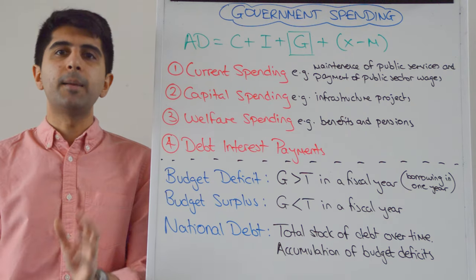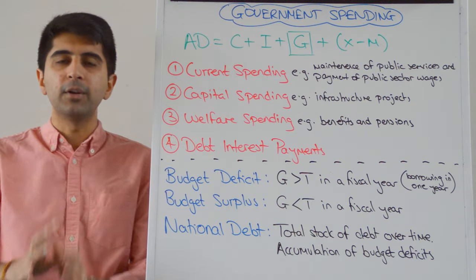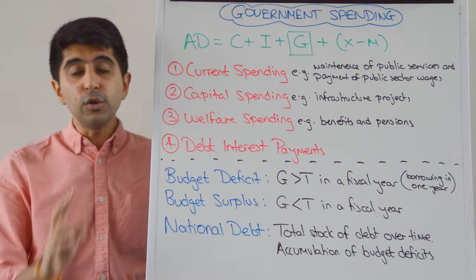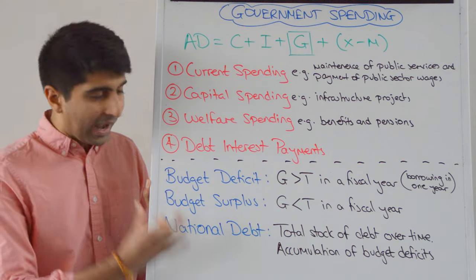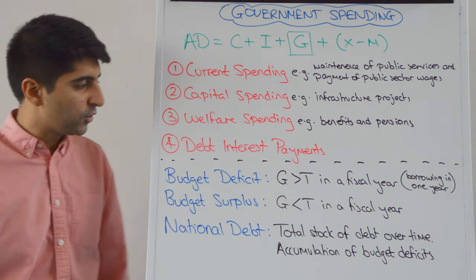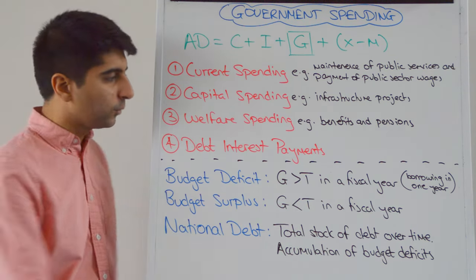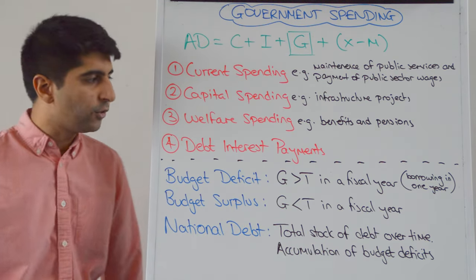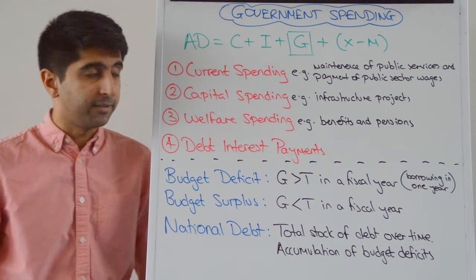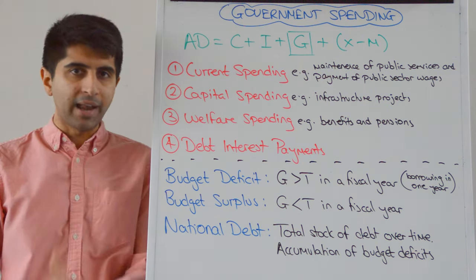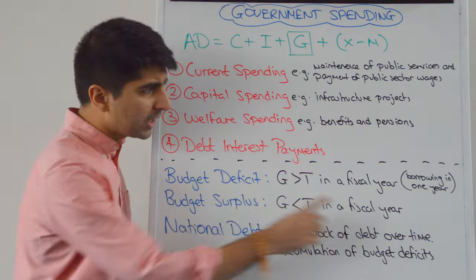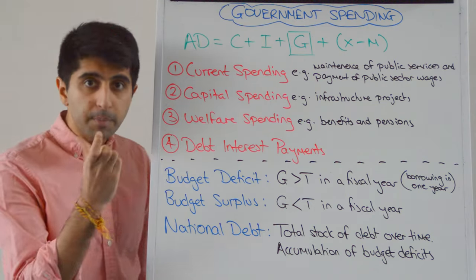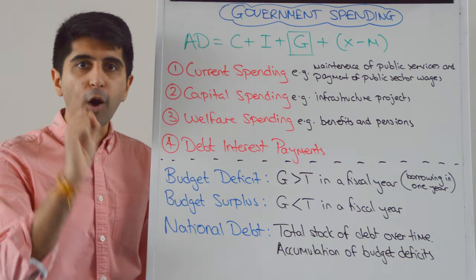We also need to know some key terms when it comes to government spending. The key difference between a budget deficit and the national debt is important to be aware of. A budget deficit is where government spending is greater than taxation revenues in a fiscal year — in the UK the fiscal year runs from April to April. Crucially, this is borrowing in one year; if the government is spending more than it receives in tax revenues, it must be borrowing the difference.